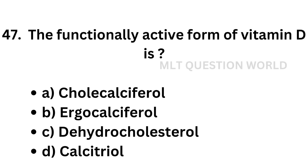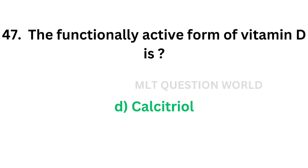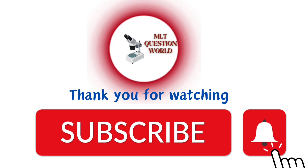Question number 47: The functionally active form of vitamin D is — option A: cholecalciferol, option B: ergocalciferol, option C: dehydrocholesterol, option D: calcitriol. The correct answer is option D, calcitriol. The functionally active form of vitamin D is calcitriol. Today we are winding up — if you are watching without subscribing, please do subscribe. You can watch the previous videos from the playlist. Thank you.